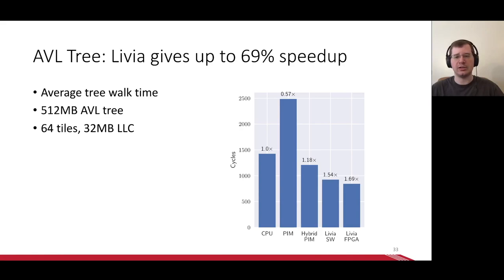Here we looked at the average time to walk a 512 megabyte AVL tree on a 64 tile system with a 32 megabyte LLC. The graph has a bar for each system, showing the average tree walk time on the y-axis and the speedup over CPU in the text above the bar. PIM took significantly longer than CPU because of all the additional DRAM lookups it creates due to its inability to exploit locality. Hybrid PIM is slightly faster than CPU because it avoids some cache pollution. That is, it doesn't evict high-locality data from caches to insert low-locality data from DRAM. Both Livia systems see significant speedups of 54% and 69% because Livia follows the ideal lookup path, migrating execution to data. FPGA sees additional benefit from accelerating the execution itself.